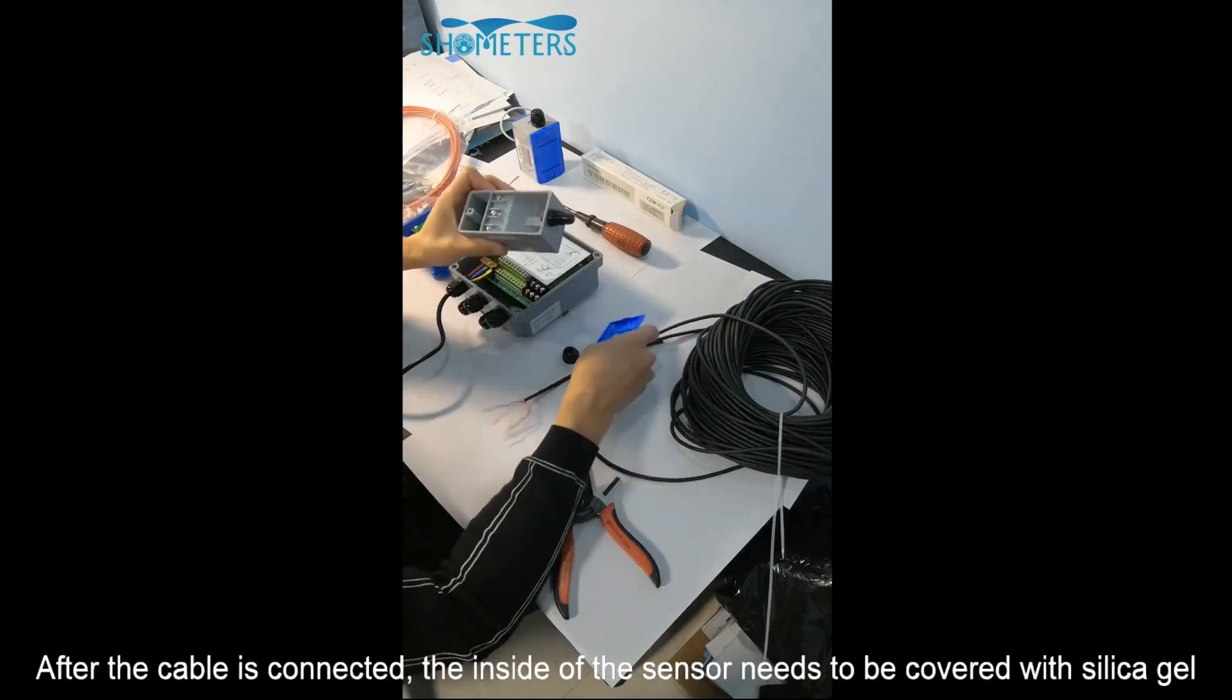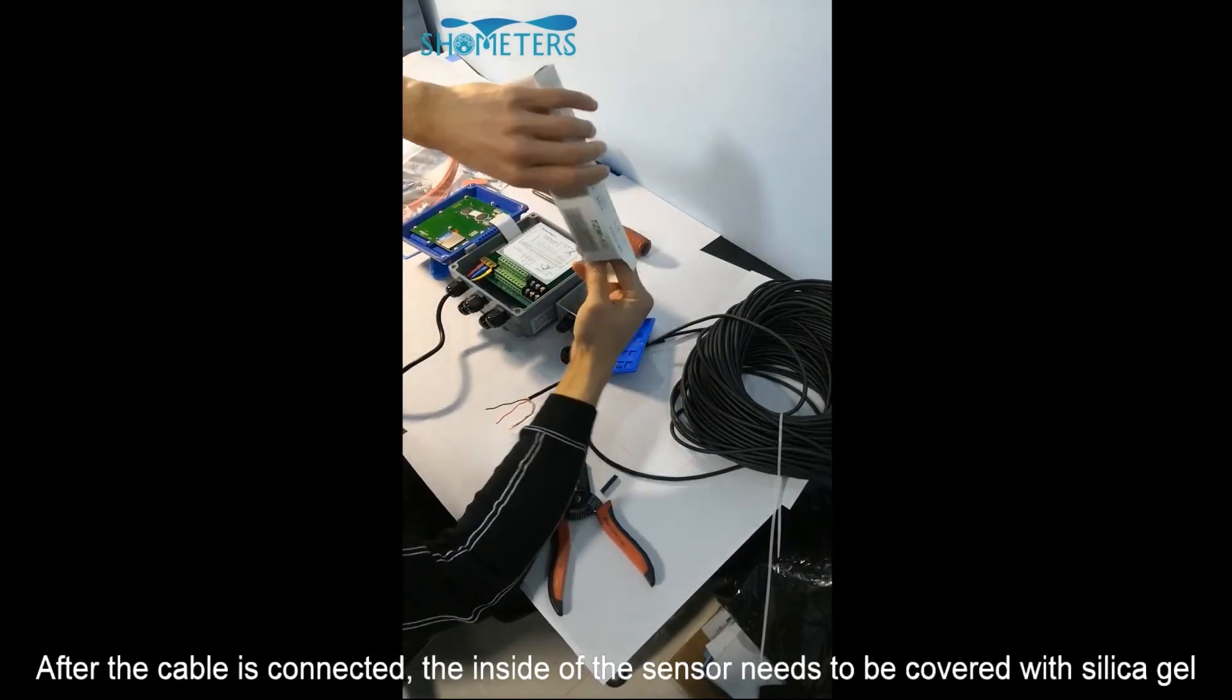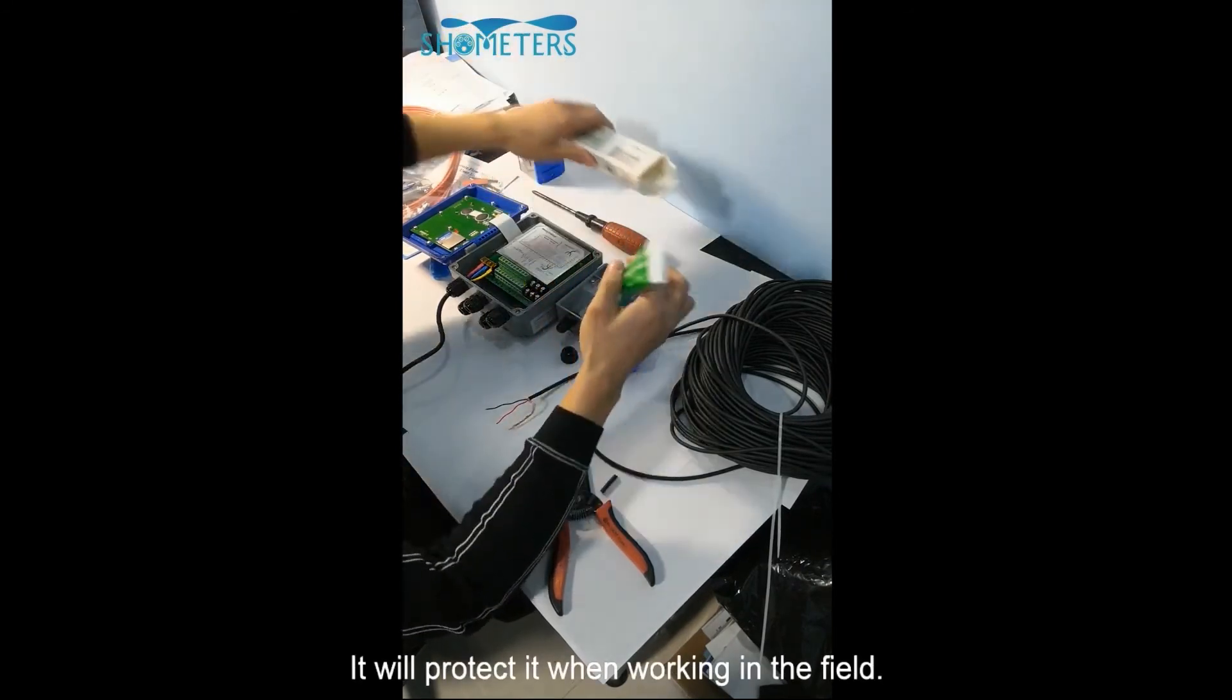After the cable is connected, the inside of the sensor needs to be covered with silica gel. It will protect it when working in the field.